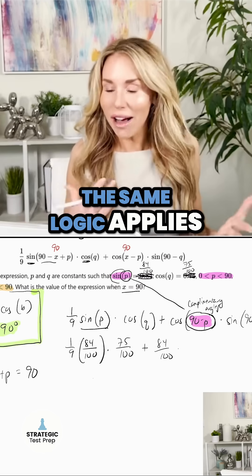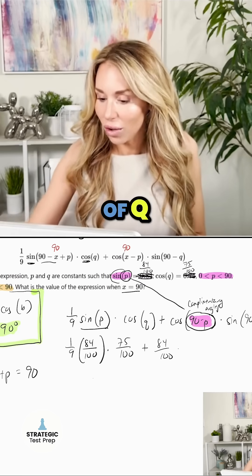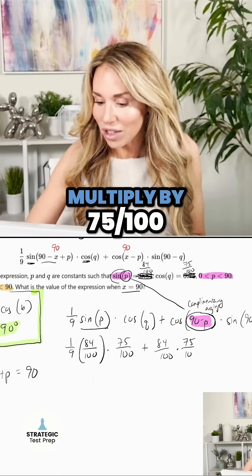And then the same logic applies, but the opposite. If we do sine of 90 minus Q, that's going to be the same as cosine of Q. So I'm going to multiply by 75 over 100.